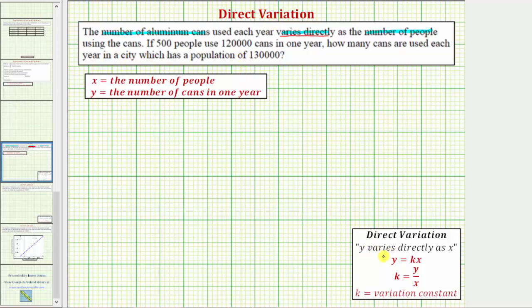Where in general, if y varies directly as x, we use the direct variation equation y equals kx to model the relationship. Where k is called the variation constant, notice how if we were to solve for k by dividing both sides by x, we can say k equals y divided by x.